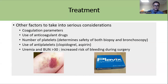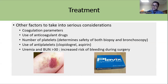Several additional factors must be considered when treating massive hemoptysis. Coagulation parameters should be assessed; any bleeding diathesis must be treated. It should be checked whether the patient is on anticoagulant drugs, platelet counts should be evaluated, and the presence of renal failure should also be assessed, as these factors increase the risk of bleeding.